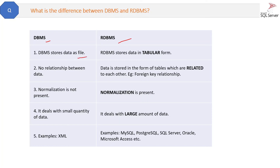DBMS stores data as a file, while RDBMS stores data in tabular form. In DBMS there is no relationship between data, but in RDBMS data is related to each other via foreign key relationship. In normal DBMS there is no normalization present, while in RDBMS normalization is there. Normally DBMS deals with small quantity of data while RDBMS deals with large amounts of data. A normal DBMS example is XML.